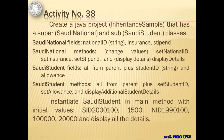Let's proceed with Activity 38 where we will create a Java project called InheritanceSample that has a superclass called SaudiNational and a subclass called SaudiStudent. The fields for SaudiNational are the national ID which is a string, insurance, and stipend. The methods are set and change those values, and the fourth method is displayDetails. The fields for SaudiStudent are all from the parent plus studentID as a string and allowance, with initial values: SID 2100, allowance 1500, NID 1990100, insurance 100000, and stipend 20000.